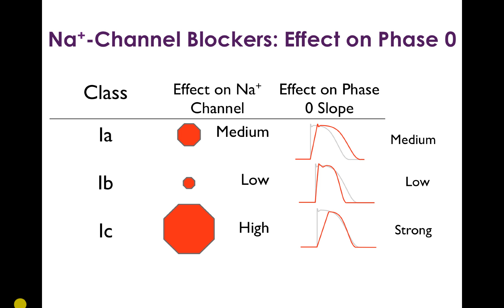Sodium channel blockers are subdivided into class 1a, 1b, and 1c drugs, which vary across two important properties. The first is potency of effect on the sodium channel: 1a drugs are medium potency, 1b drugs are low potency, and 1c drugs are high potency. Looking at the phase zero slope in the third column, 1a drugs have a medium effect, 1b drugs have a low effect, and 1c drugs have the highest effect on the slope of phase zero.